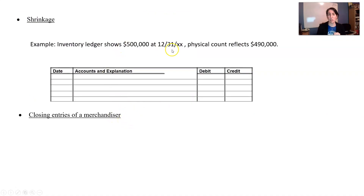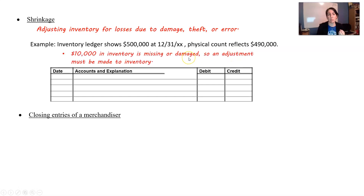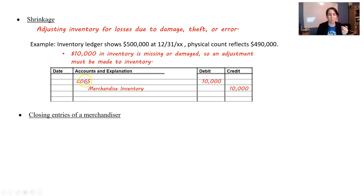One of the last things we're dealing with is shrinkage — it just happens, it's part of business. Inventory gets damaged, stolen, or lost. So we need to adjust our records. No matter what system you use, you count inventory at least once a year, and very often there are discrepancies. If your books show $500,000 of inventory but the actual count shows $490,000, then $10,000 went missing during the year. We debit cost of goods sold and reduce inventory by $10,000. That's where all inventory expenses live — never say 'inventory expense' as an account name; it's cost of goods sold.